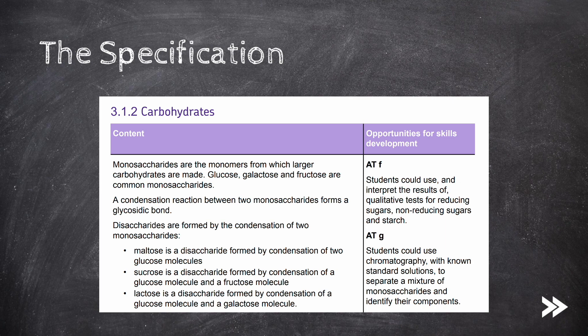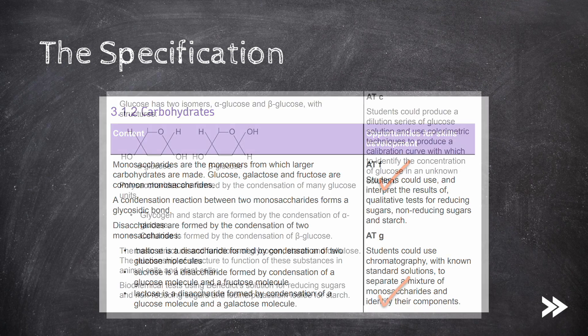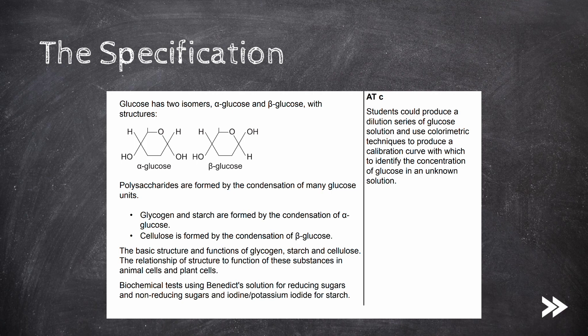That covers the specification. We've covered monosaccharides and the names of the most common monosaccharides. We've covered the formation of a glycosidic bond and disaccharides, as well as maltose, sucrose and lactose, and which monosaccharides they're each made up of. We know the structures of both alpha and beta glucose and the difference between them. We also now know about polysaccharides — in particular glycogen, starch and cellulose — and how their structures relate to their individual functions in plant and animal cells. And finally, we know the biochemical tests used to test for reducing and non-reducing sugars, as well as the test for starch.